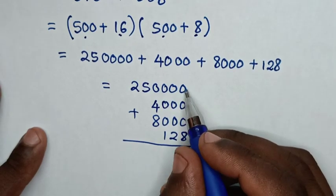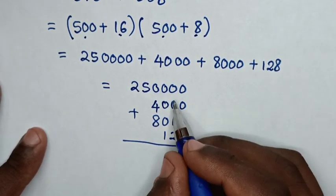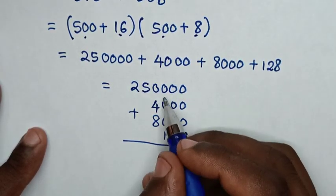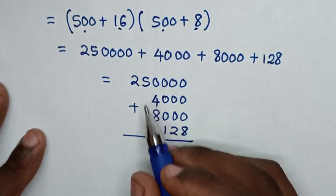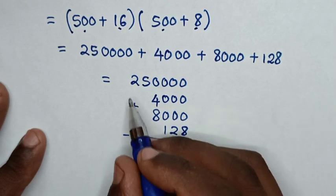Adding these together: 8, then 2, then 1, then 4 plus 8 is 12 (write 2, carry 1), then 5 plus 1 is 6, then 2. This gives us 262,128.